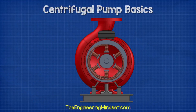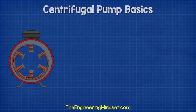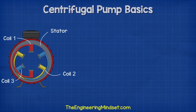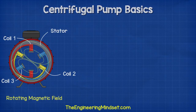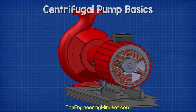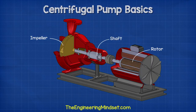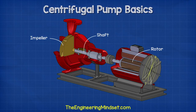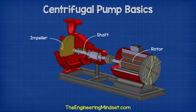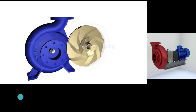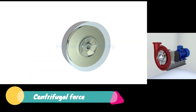We will look at the three-phase motor as it is the most common. Inside the three-phase induction motor, three separated coils produce a rotating magnetic field. The rotor is connected to the shaft, and when the rotor rotates so will the impeller. By creating a rotating magnetic field, we spin the rotor, which spins the shaft, which spins the impeller.